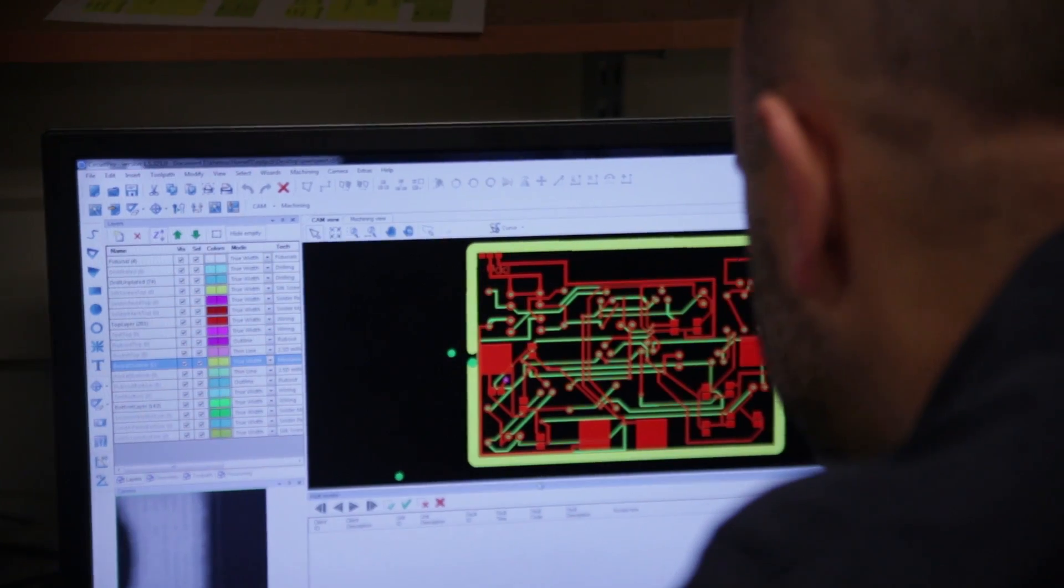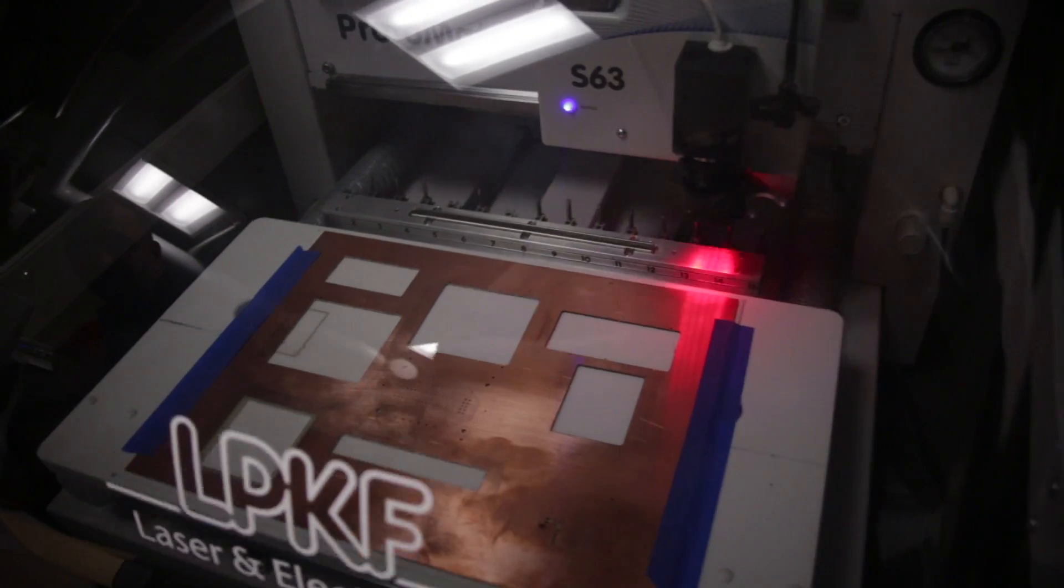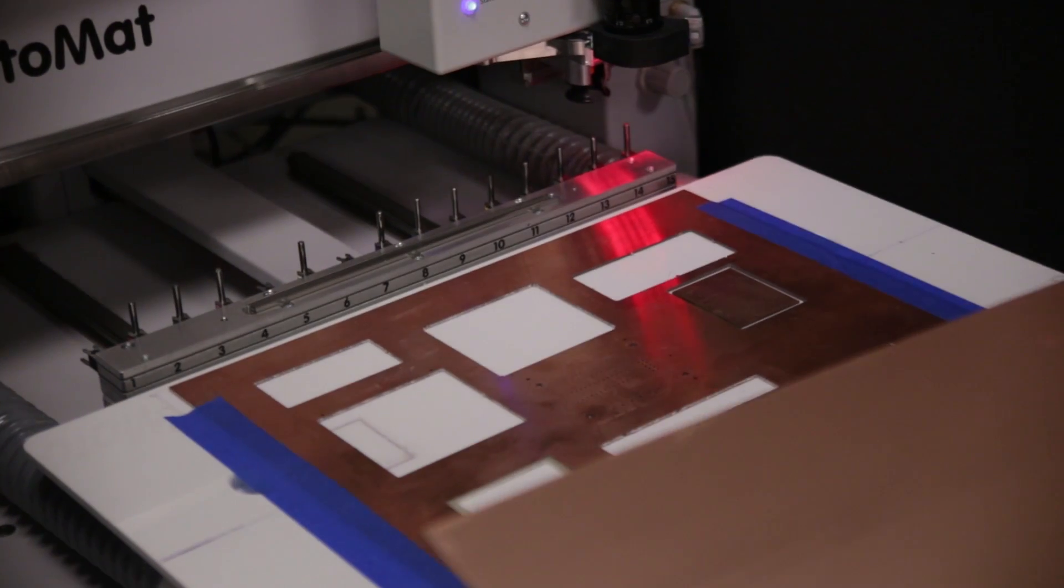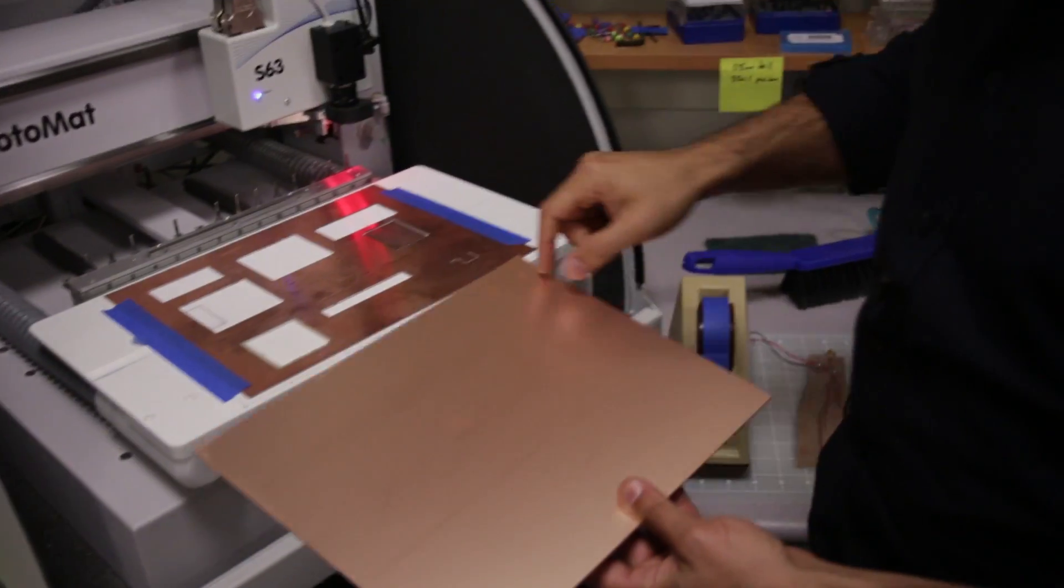One of the unique things we have here is the printed circuit board router. We're going to use this machine to actually take this blank circuit board and literally route out, like a woodcutter, a circuit board.